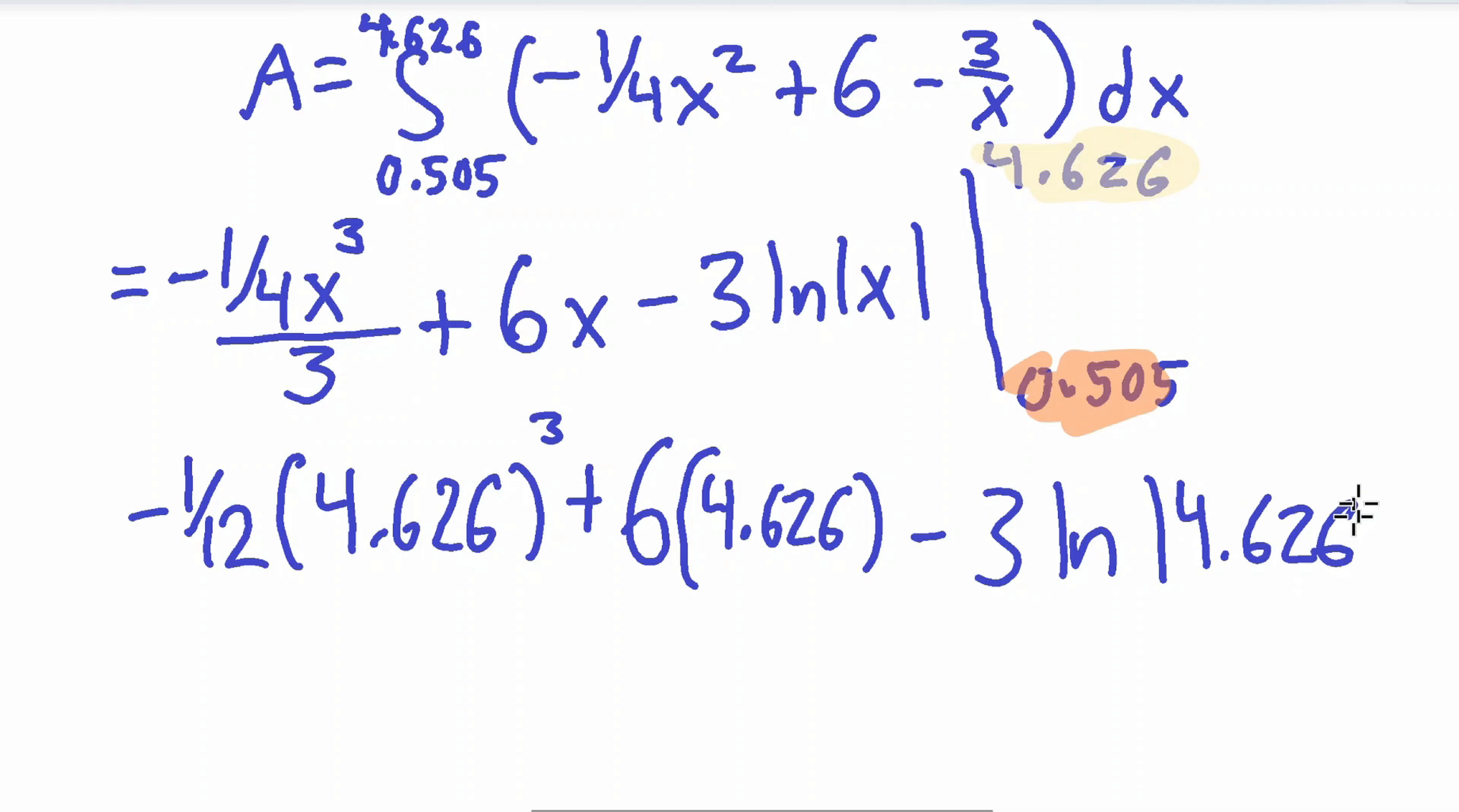All right, and now remember, we have to subtract that all, subtract it all by plugging in 0.505 into this expression, into this equation. So I'm going to make sure you write a parentheses on everything since we're subtracting everything inside. So now, negative 1/12 times 0.505 cubed, plus 6 times our X value, which is 0.505 here, minus 3 ln 0.505.